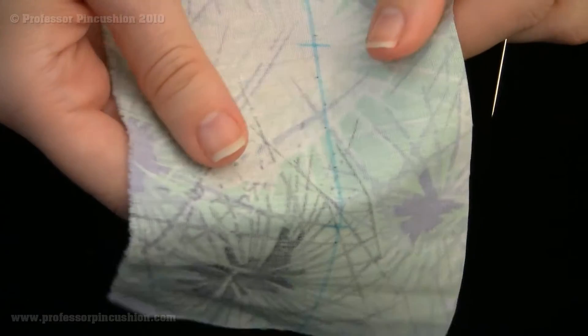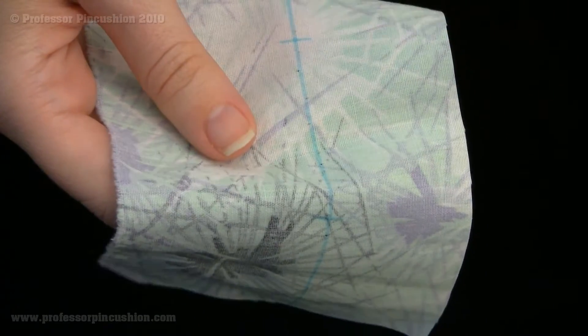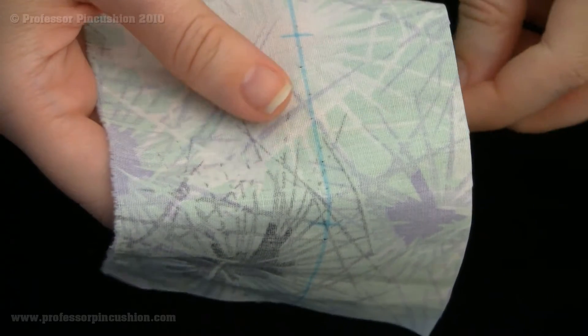So let's get started. I'm going to do the running stitch on a scrap piece of fabric that I have, and I'm using embroidery floss so it's a little bit easier to see for demonstration purposes.